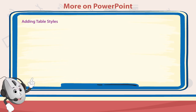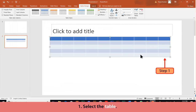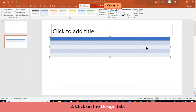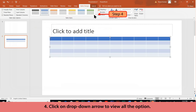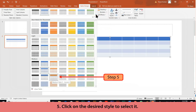Adding Table Styles: Follow these steps to apply table styles. Select the table, then click on the Design tab. Point the cursor over a table style to see a live preview of the style on the slide. Click on the drop-down arrow to view all options, then click on the desired style to select it.